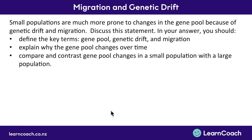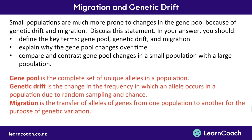Let's look at an exam question. Small populations are much more prone to changes in the gene pool because of genetic drift and migration. We're going to discuss this, include key terms, talk about why the gene pool changes over time, and compare and contrast how the gene pool changes in a small population compared to a large one. The gene pool is the complete set of all the alleles in a population. Genetic drift is the change in how often alleles occur in a population, due to random sampling and chance. Migration is the transfer of alleles or genes from one population into another, and the purpose is genetic variation.